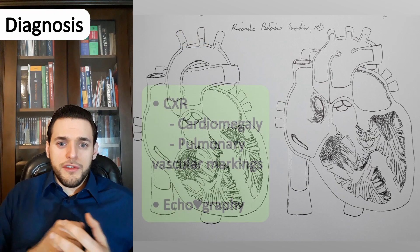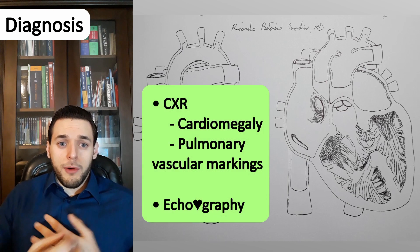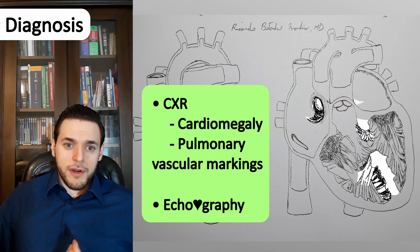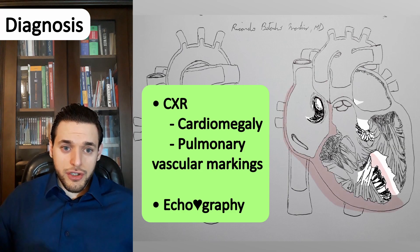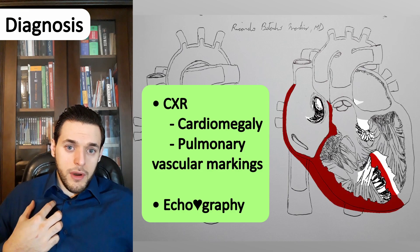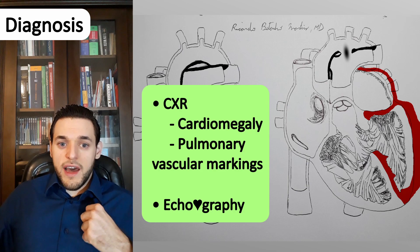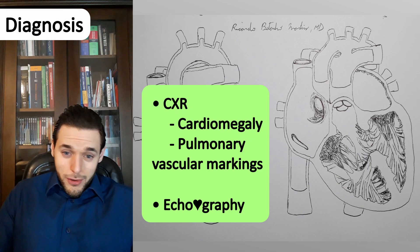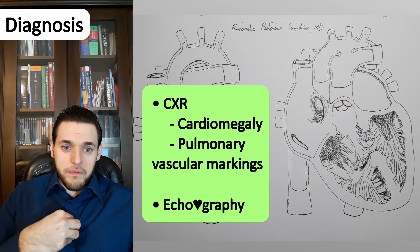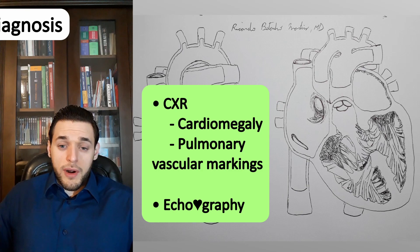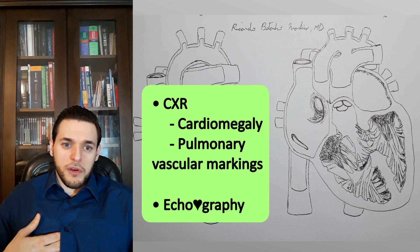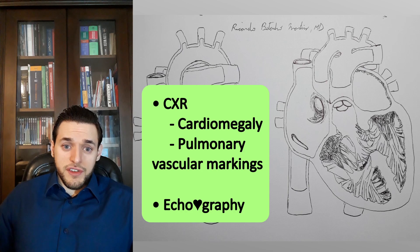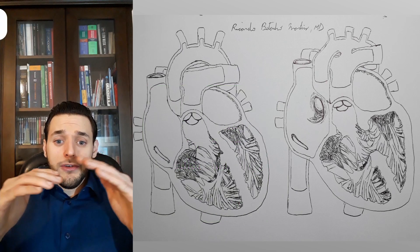Chest radiography will often display cardiomegaly if the shunt is large, as well as increased pulmonary vascular markings from increased pulmonary flow. In atrial and ventricular septal defects, the cardiomegaly is derived from dilation of the right atrium and ventricle, whereas in PDA it is mostly due to left atrium and ventricle enlargement. The gold standard for diagnosis, as with pretty much all congenital heart diseases, is Doppler echocardiography. Catheterization for diagnostic purposes is usually reserved for more complex cases where other variants have been considered, such as significant pulmonary hypertension.